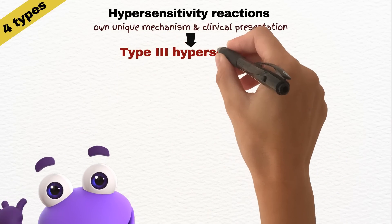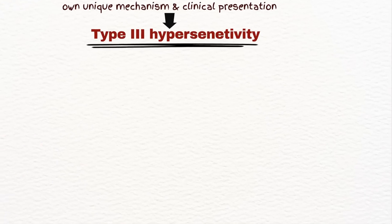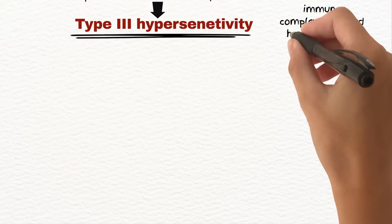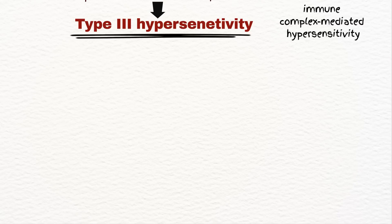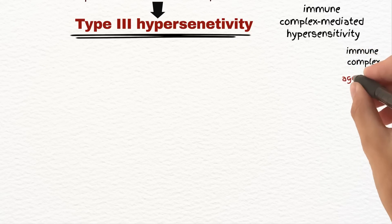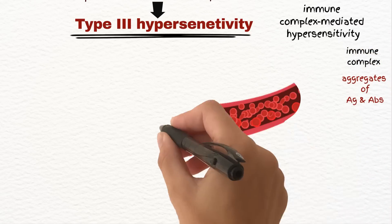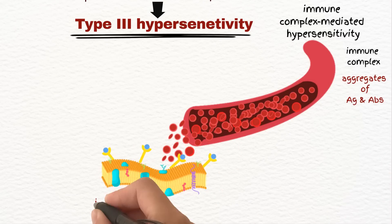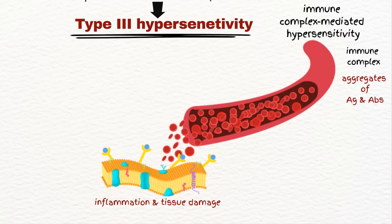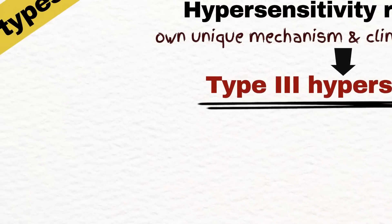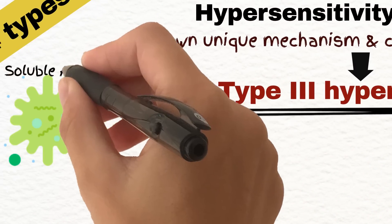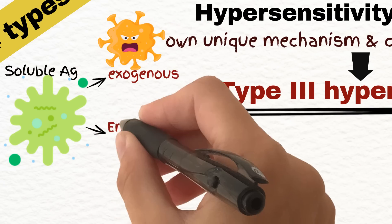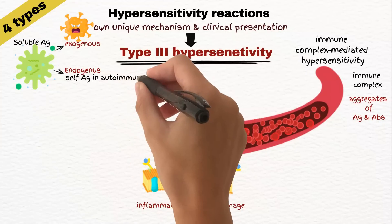Let's move on to type 3 hypersensitivity, also known as immune-complex-mediated hypersensitivity. It occurs when immune complexes — aggregates of antigens and antibodies — are formed in the bloodstream and then deposited in various tissues, leading to inflammation and tissue damage. The antigens involved are typically soluble and can be exogenous, such as microbial antigens, or endogenous, such as self-antigens in autoimmune diseases.